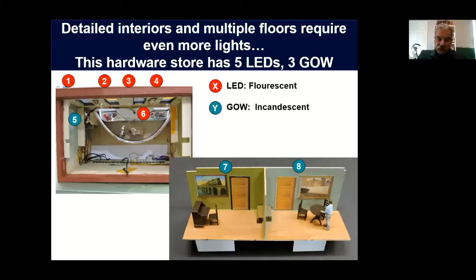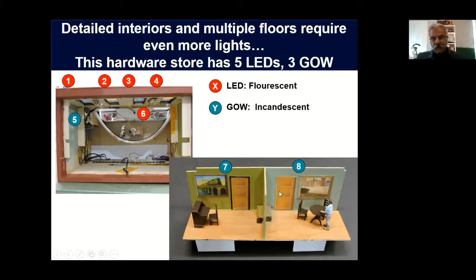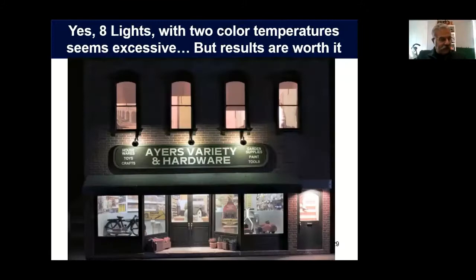If you have detailed interiors and multiple floors, that requires even more lights. This is a hardware store — the lower level is the hardware store itself, the upper level is a residence, which is pretty common in many structures. For the lower level I used LEDs to mimic fluorescent lights. There are also four LEDs on the outside. For the upper level I used grain of wheat bulbs to mimic incandescent lights, and I put a somewhat complete interior inside. Eight lights with two color temperatures seems excessive, but the results in my opinion are worth it.